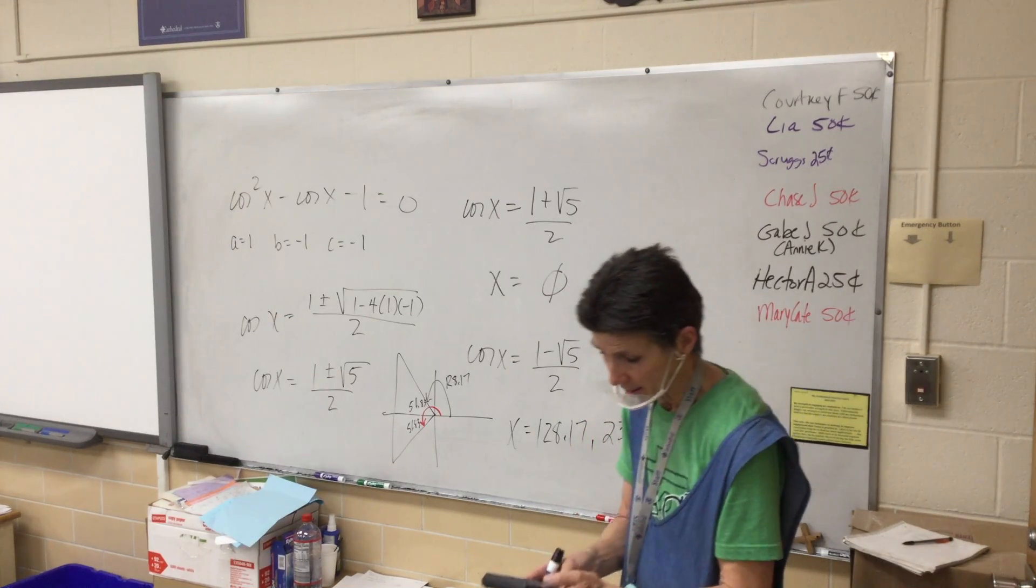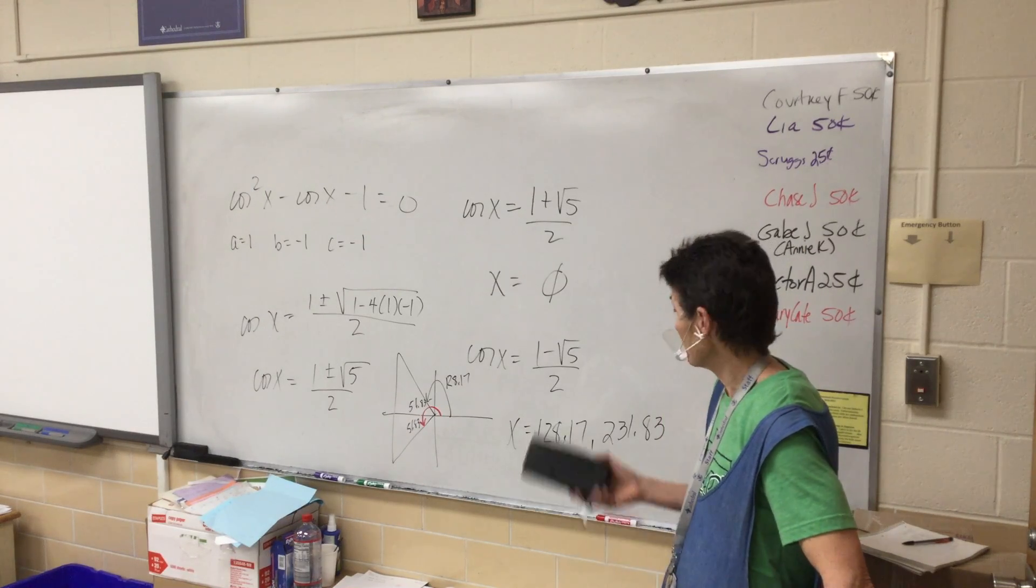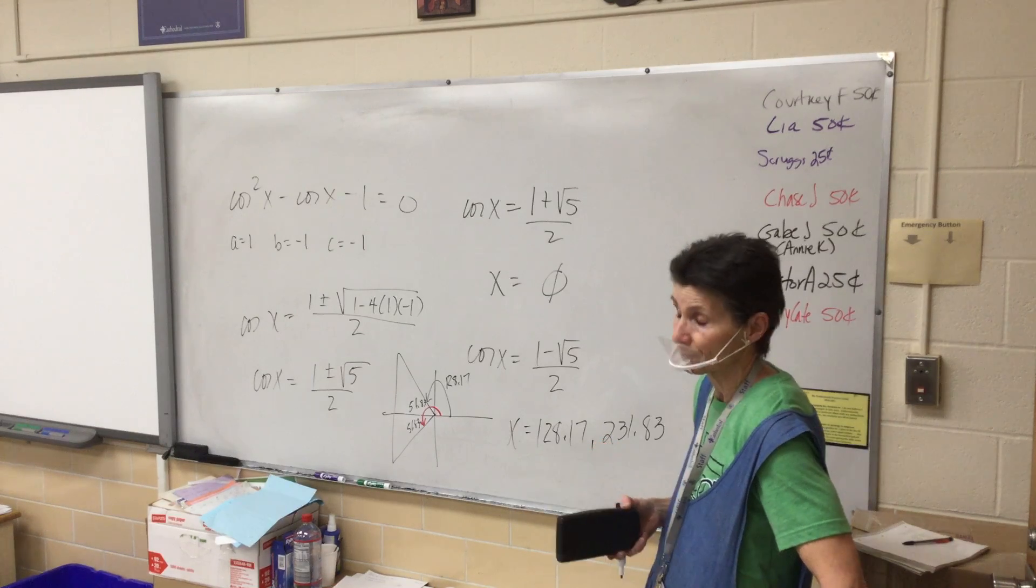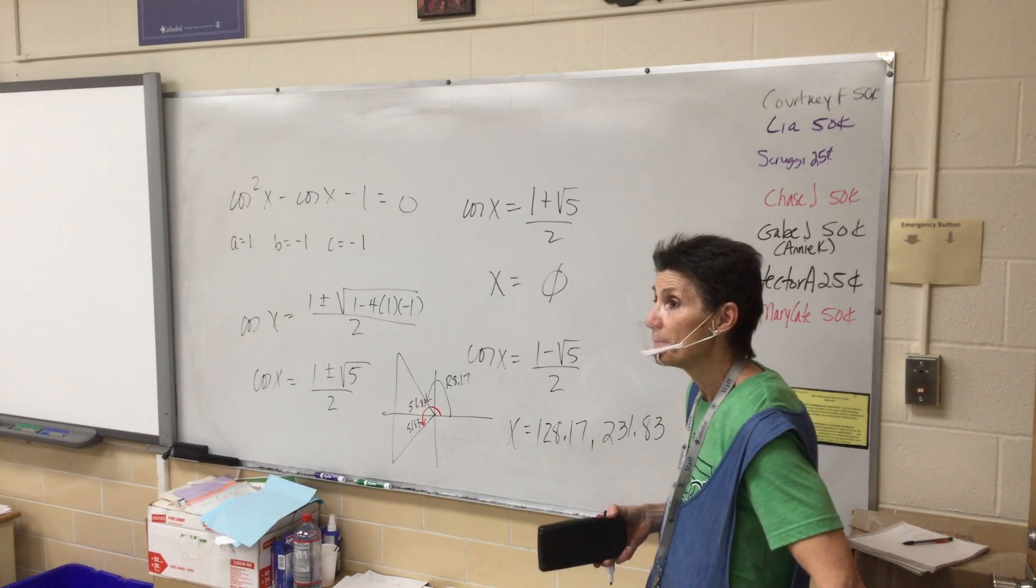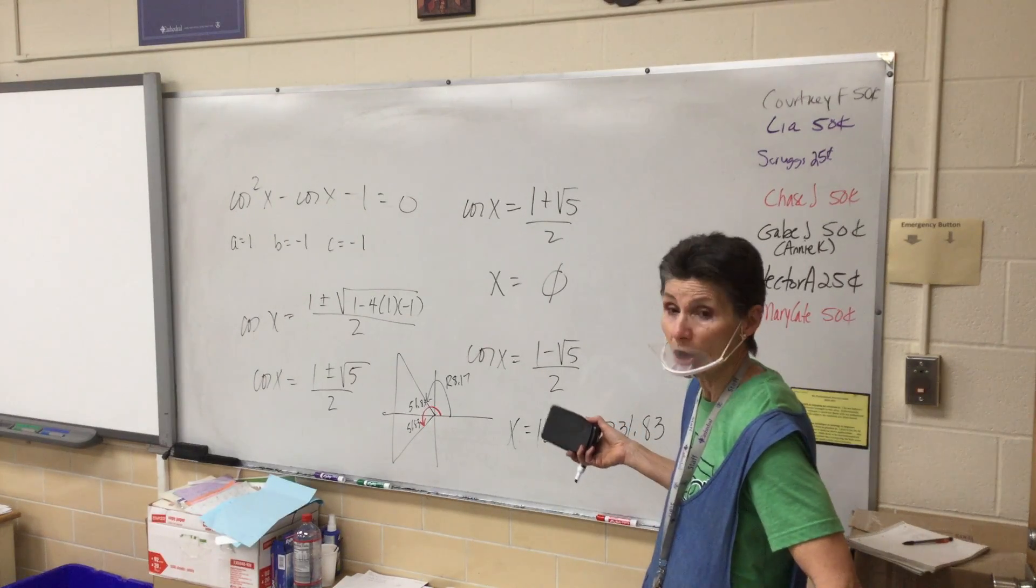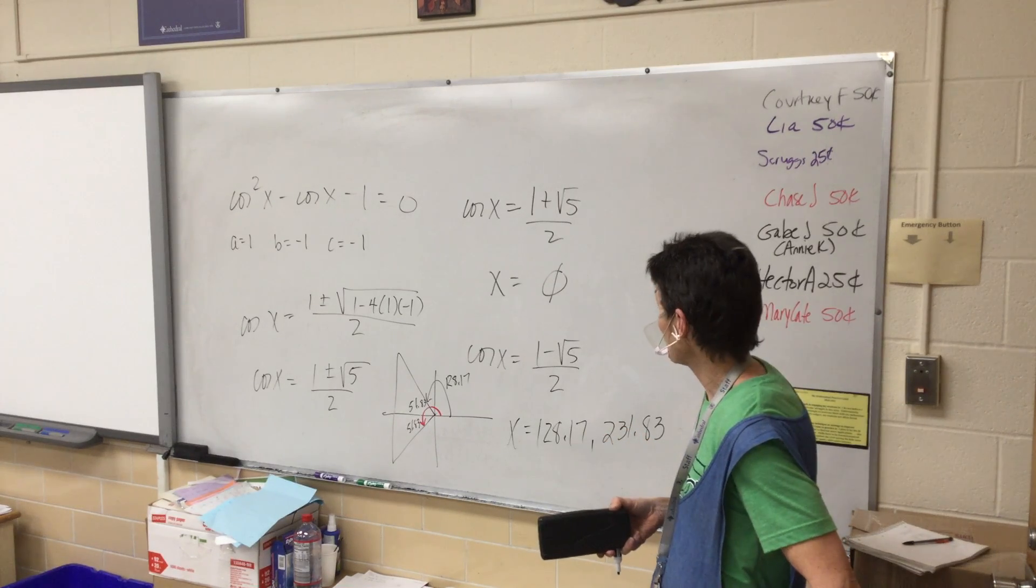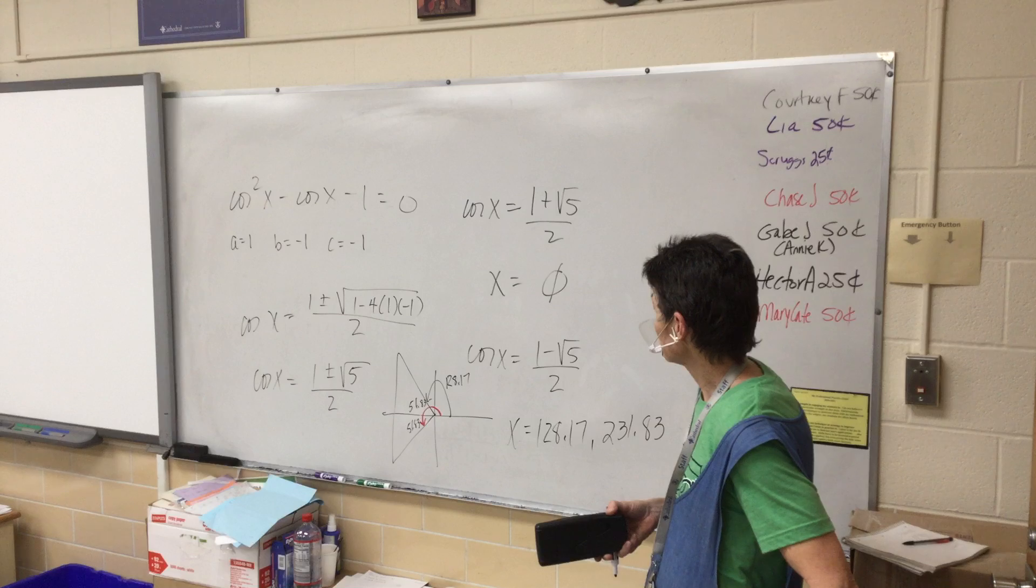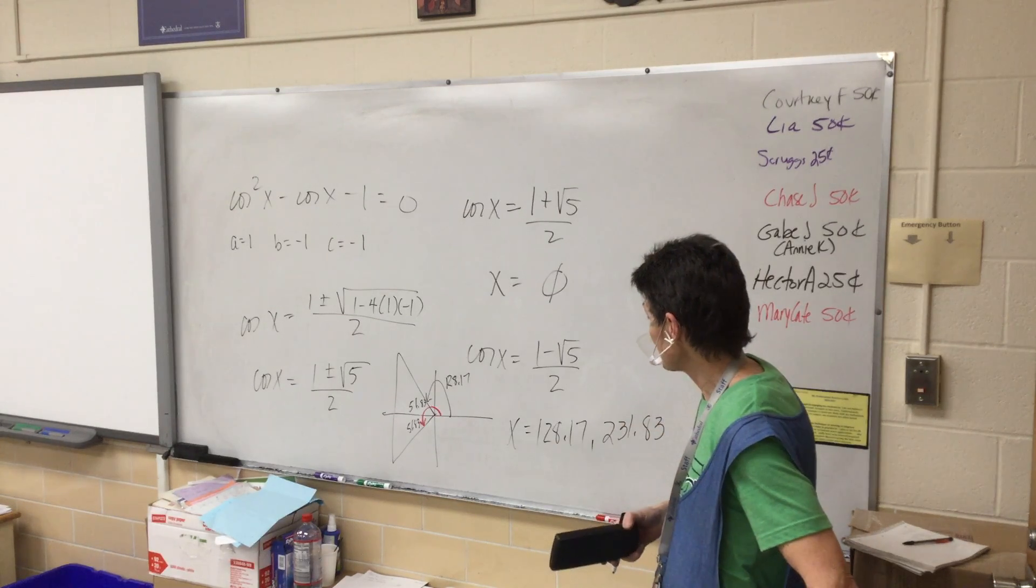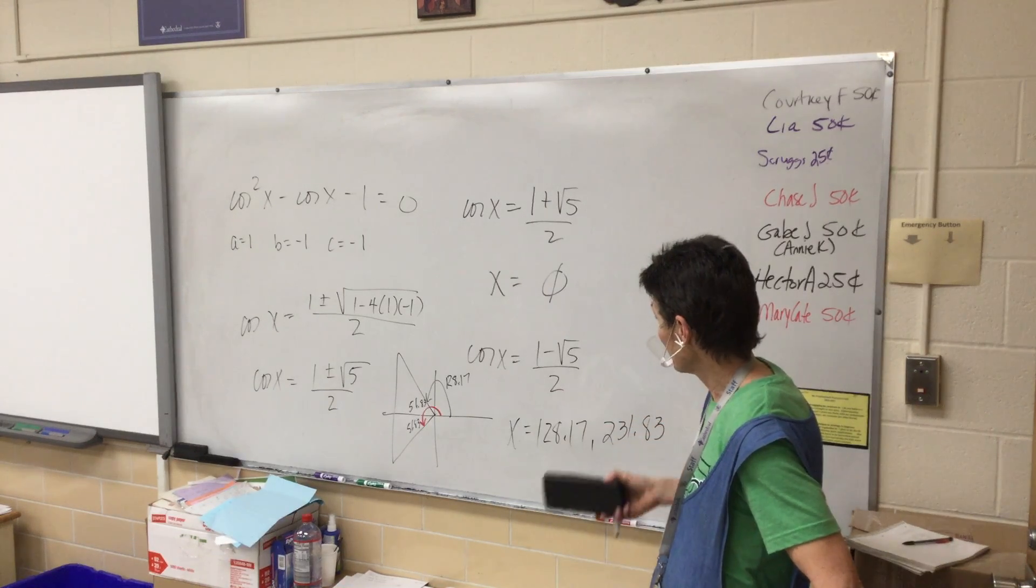Can we figure out, we can subtract 180 from 128 and find this one? Yeah, they're reference angles. They're the same, and then add whatever that is to 180. That is a perfect strategy. So let's go ahead and find the reference angle, which would be 51.83. So then I can do 180 plus that and get my other answer, which is 231.83.